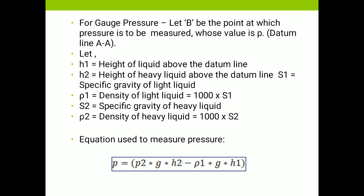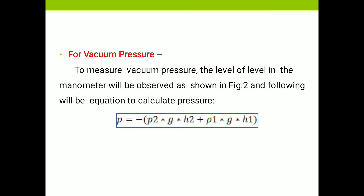After simplification, we get the equation: P = ρ2·g·H2 − ρ1·g·H1. By using this equation, we can calculate the pressure through the U-tube manometer. For vacuum pressure, we use the equation: P = −ρ2·g·H2 + ρ1·g·H1.